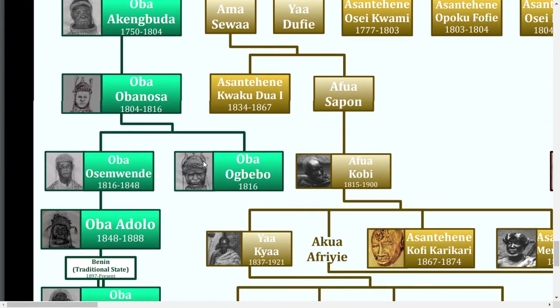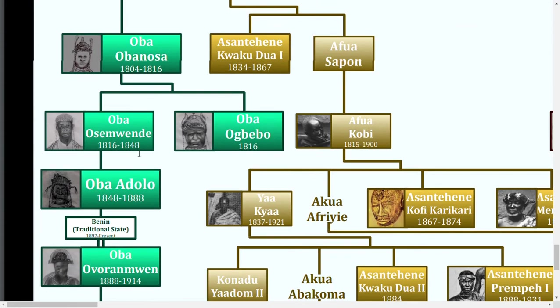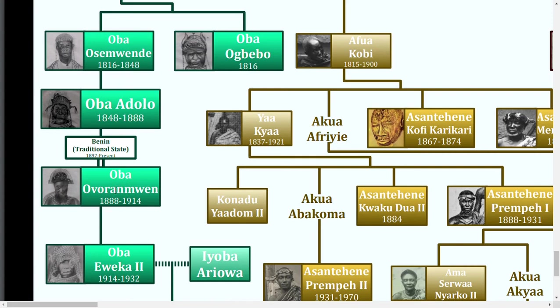Oba Nosa passed it to Ogbebo, who then got — I believe — murdered by his brother Osamwende, who took the throne, who passed it to his son Oba Adolo, and finally to Avuramwen. By 1897, Benin was actually conquered by the British Empire, pretty much ending the actual Benin Empire. But Avuramwen did continue his rule until his death in 1914.